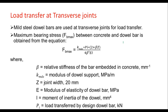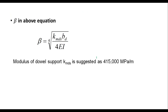Load transfer at transverse joints is done through dowel bars. Dowel bars are generally made of mild steel and the maximum bearing stress between concrete and dowel bar is obtained from an equation where Fb_max is the maximum bearing stress, Kmds is the modulus of dowel support, Pi is the load transferred by the dowel bar, beta is the relative stiffness of the bar embedded in the concrete, and Z is the joint spacing. E is the modulus of elasticity of the dowel bar and I is the moment of inertia.